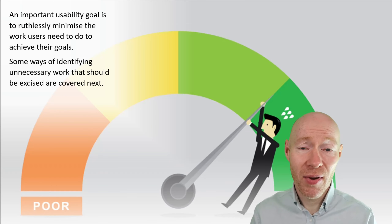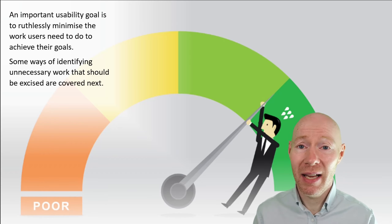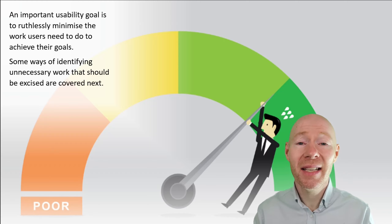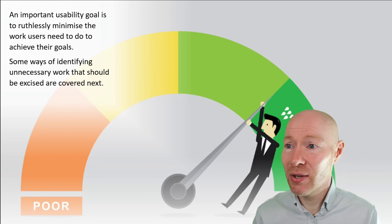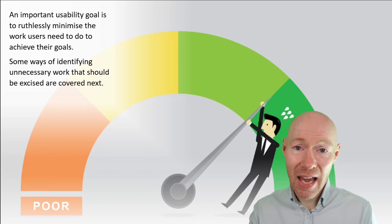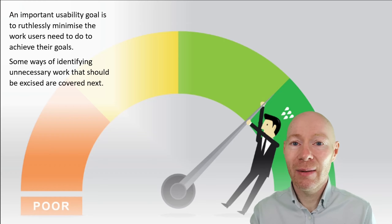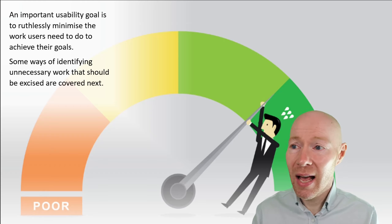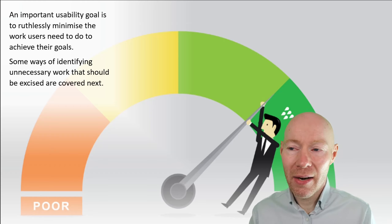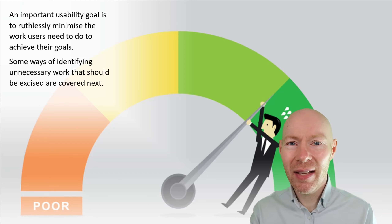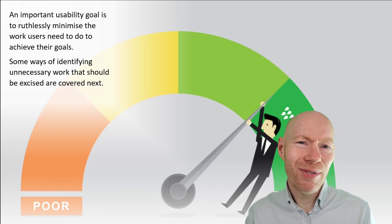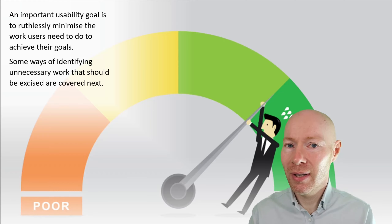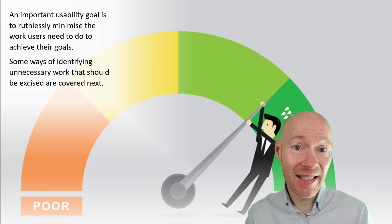Now, we've covered this many times, but it's so important we will reiterate it one more time. One of the most important usability goals is to get rid of unnecessary work, to help the user achieve their goals as easily as possible. We want to identify excise — things that the user ideally wouldn't need to do, or shouldn't need to do in terms of meeting their goals — and then get rid of that.